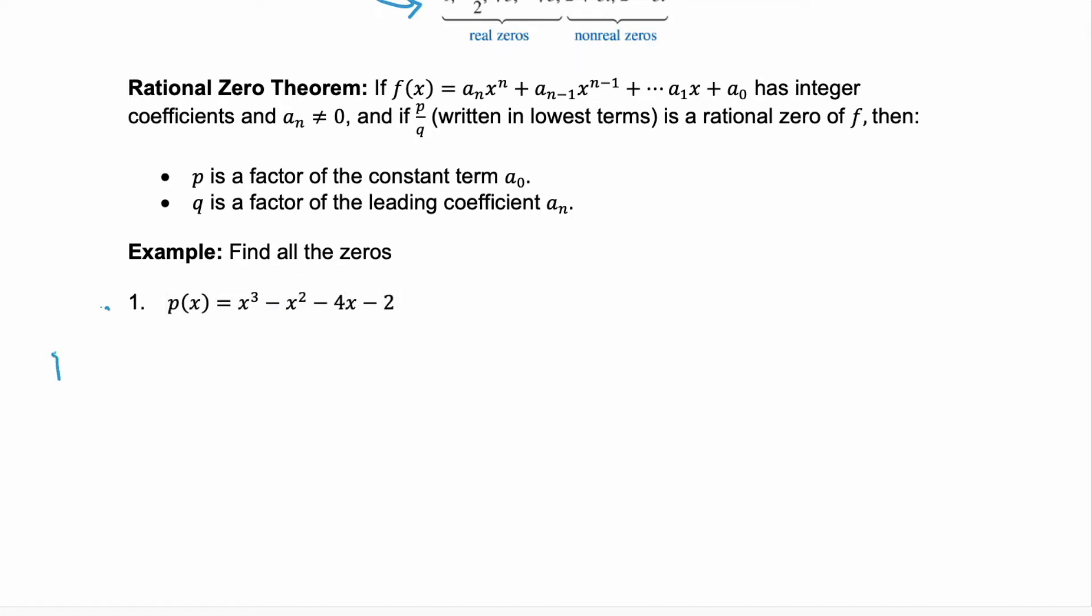Now, the first step is to identify p. p is your constant term, which here is -2. We want to know the factors of -2. Those would be -1 × 2, or 1 × -2. Then we need to find the value q. q is your leading coefficient. So make sure your variables are in descending order. Then look at the leading term and find the coefficient. Here, the leading coefficient is 1. The factors for 1 are 1 × 1 and -1 × -1. We don't want to write any of these factors multiple times.